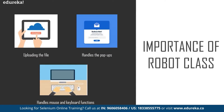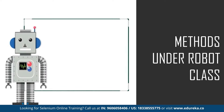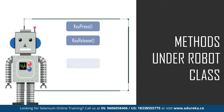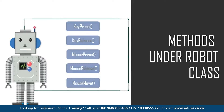Now let's move on to our next topic: what are the different methods used while working with the Robot class? There are basically five different methods. As mentioned earlier, it handles all the keyboard and mouse functions.